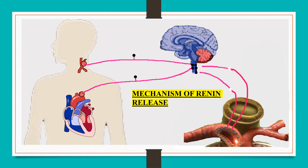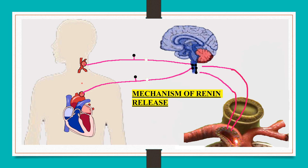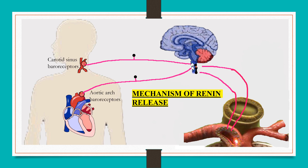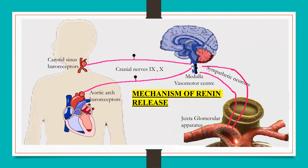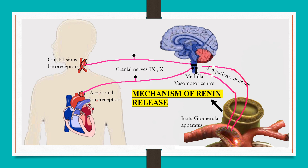This is a detailed mechanism of renin release into the circulation. Whenever there is fallen blood pressure, there is less stretch on the vessel wall, which is detected by baroreceptors of the carotid sinus and aortic arch, and signals are sent to the medullary vasomotor center through cranial nerves 9 and 10. This increases sympathetic outflow to juxtaglomerular cells present in the kidneys. These sympathetic neurons release noradrenaline, which acts on beta-1 receptors of juxtaglomerular cells and causes release of renin. This is the mechanism of renin release into the circulation through an extra-renal pathway.